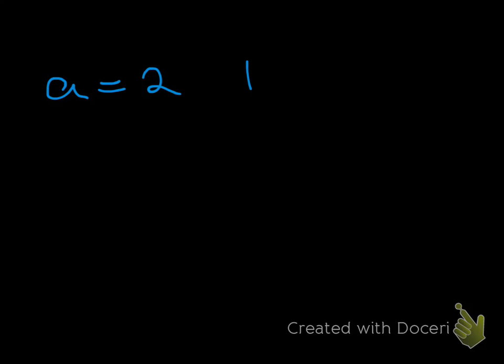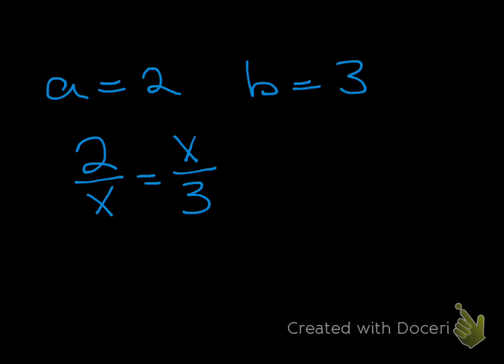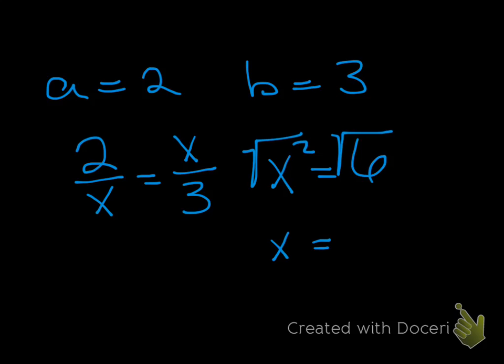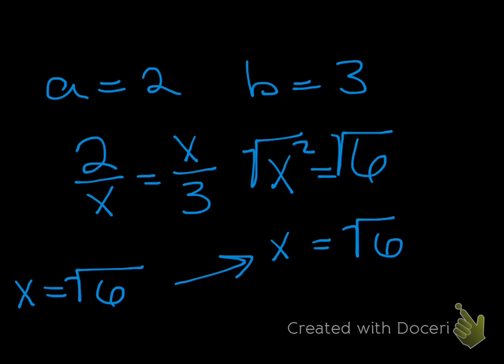The geometric mean of two positive numbers is the positive square root of their product. So if a equals 2 and b equals 3, that's the same as saying 2 to x equals x to 3. Cross-multiplying gives x squared equals 6, so x equals the square root of 6. The geometric mean is the square root of 2 times 3, which is 6.